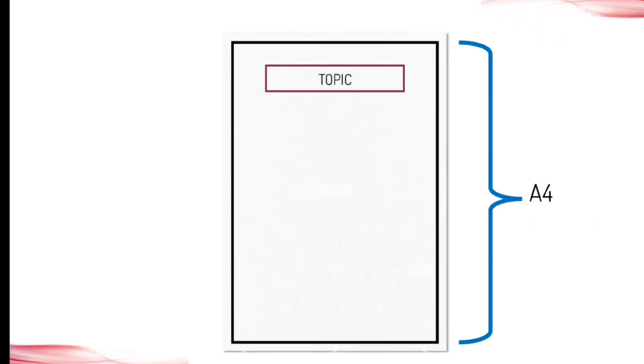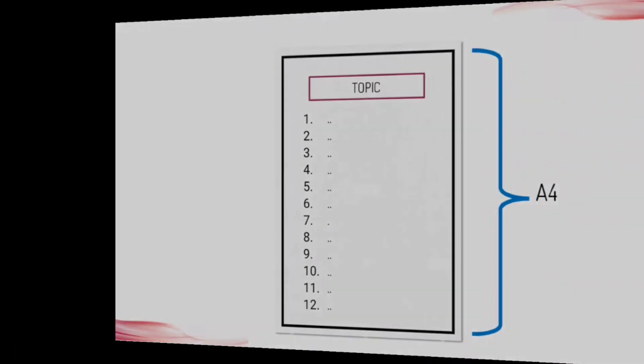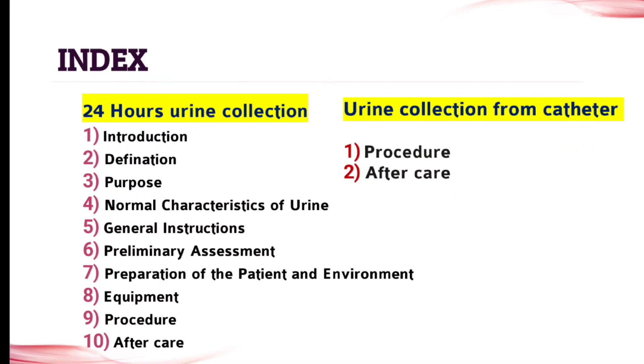You need A4 size paper — make sure that you put a boundary on all your papers. Write topics on the upper side of every particular page and under the topic write all the points. The topics given in the index are all needed for your assignment, so start from the first topic to the last.